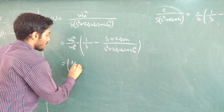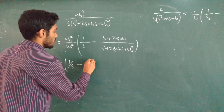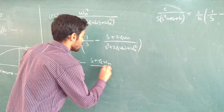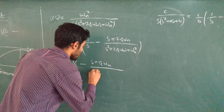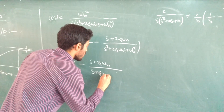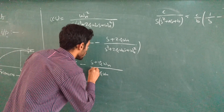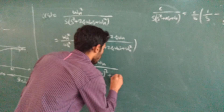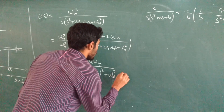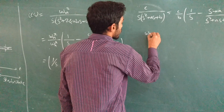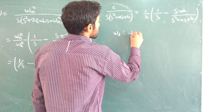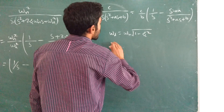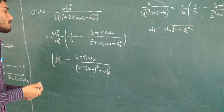We can also write this as: 1/s − (s + ξωn) / [(s + ξωn)² + ωd²], where ωd = ωn · √(1 − ξ²) is the damped frequency of oscillation.